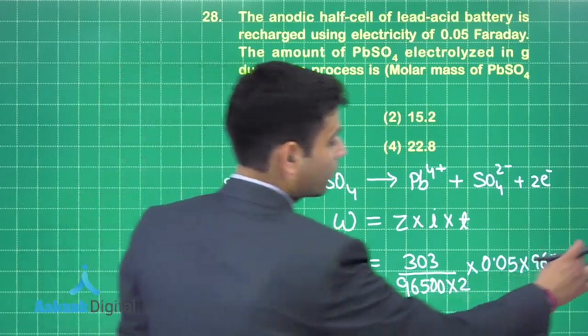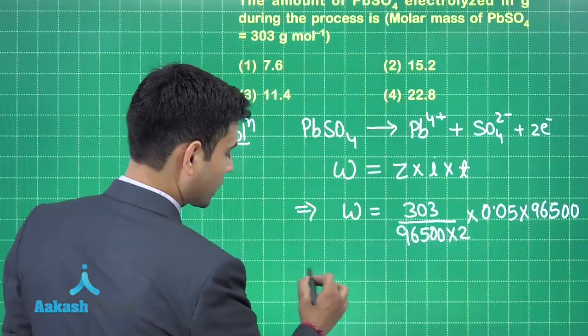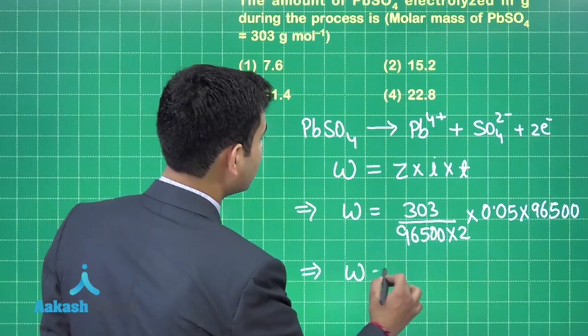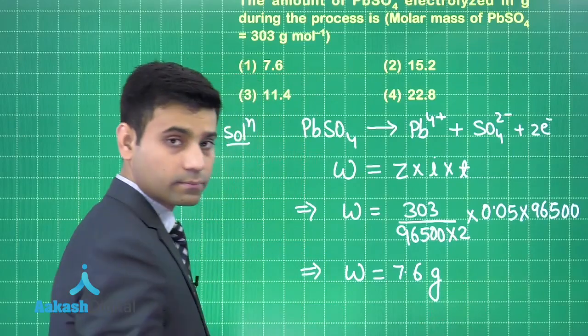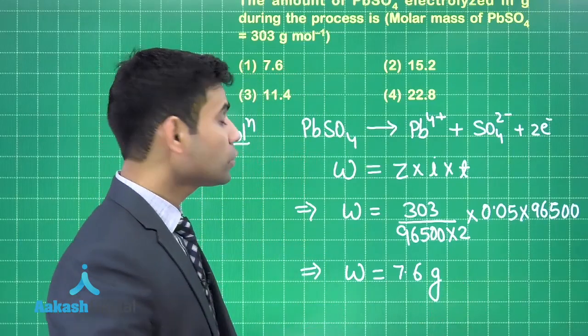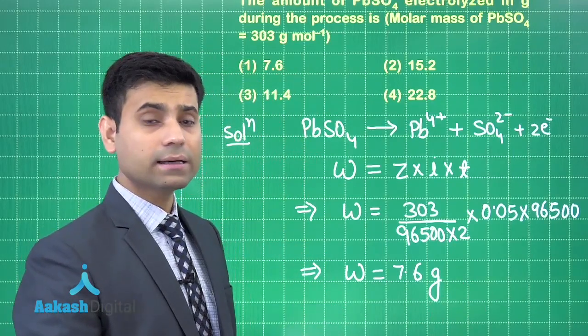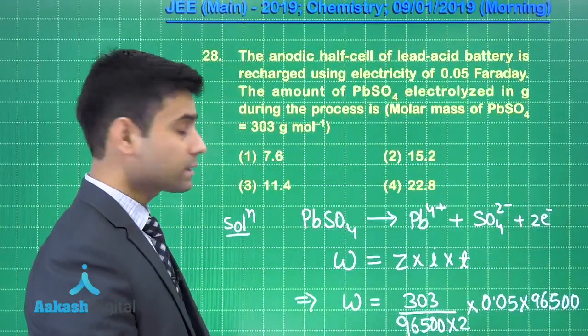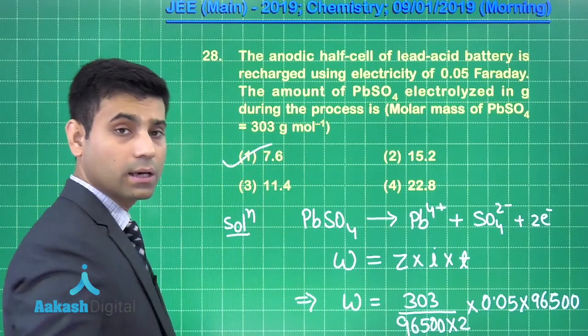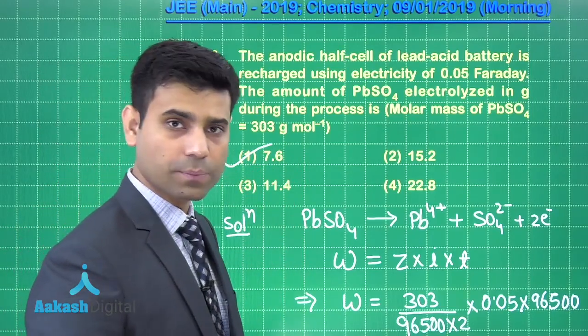On solving, we will get the value of w which is weight of PbSO4 and it is approximately equal to 7.6 gram. Now, we go through the options. We can see that in option 1, the weight of PbSO4 given is 7.6 gram. Hence, the correct answer for this question is option 1.